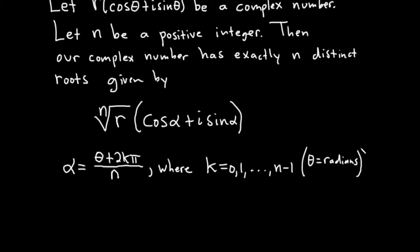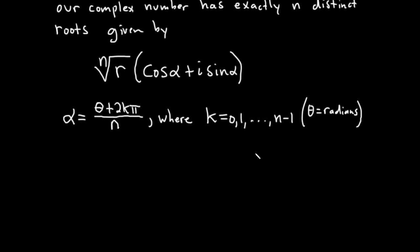If theta is in degrees, the formula is very similar. Alpha equals theta plus 360 degrees times k over n. And everything else is the same, where k runs from 0 to n minus 1. And in this case, theta would be in degrees.